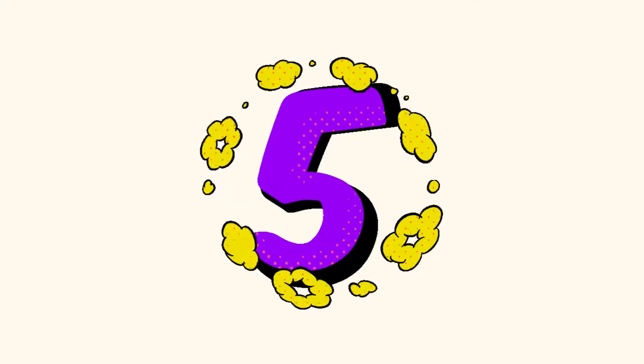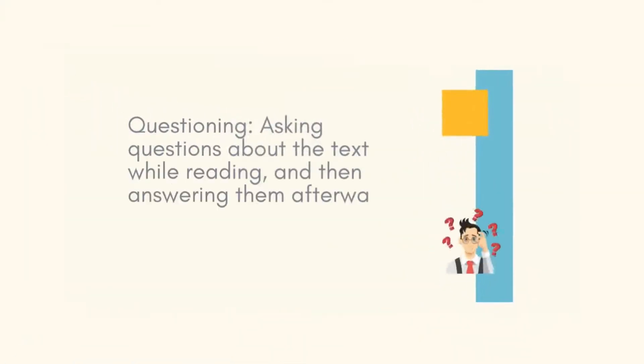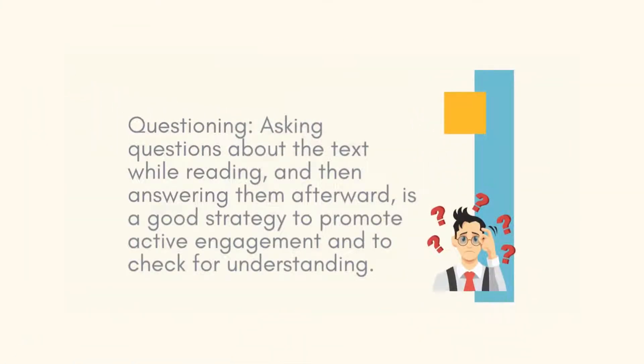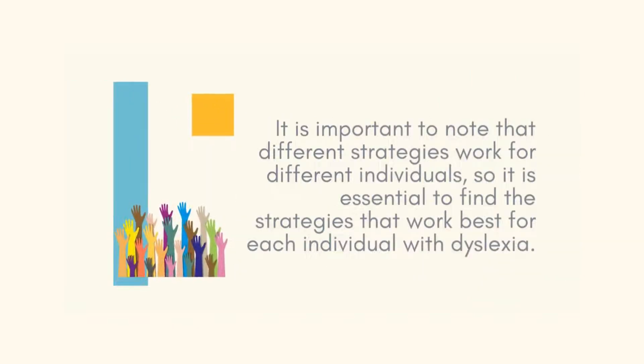Five: questioning. Asking questions about the text while reading and then answering them afterward is a good strategy to promote active engagement and to check for understanding. It is important to note that different strategies work for different individuals, so it is essential to find the strategies that work best for each individual with dyslexia.